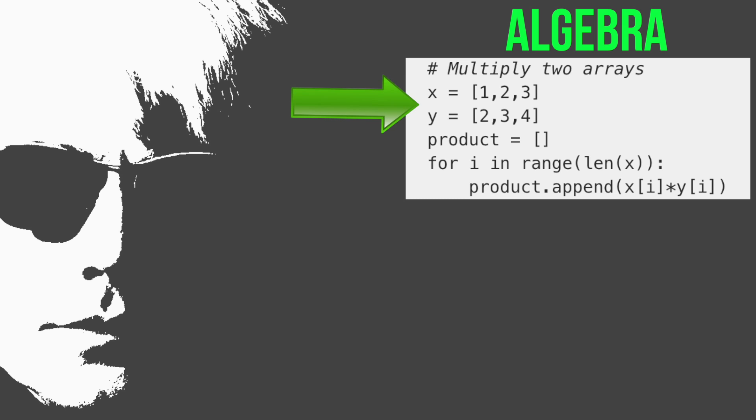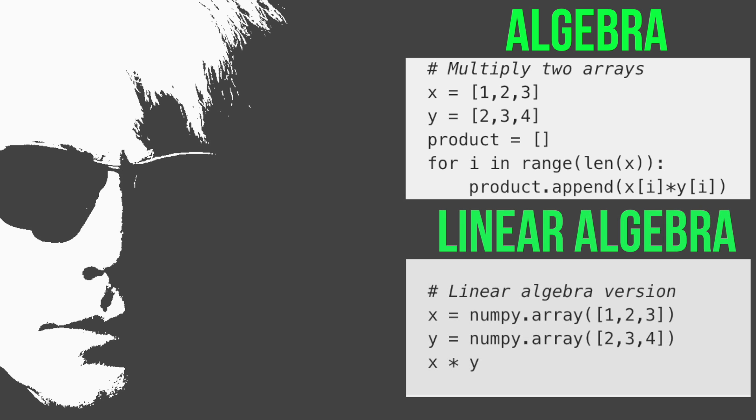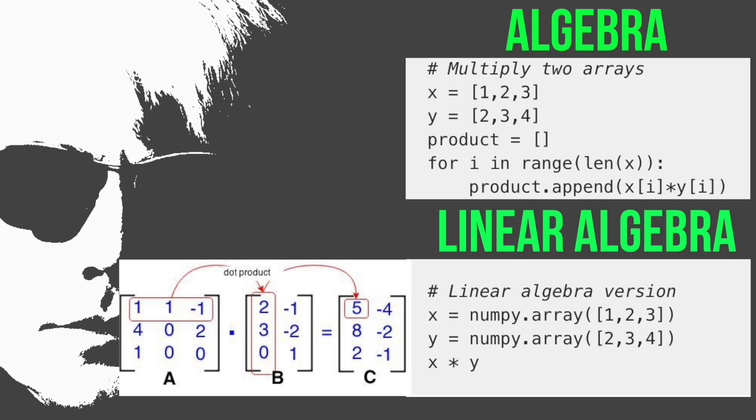and divide them. So given two arrays, the algebraic way to multiply them would be to do it like this. And the linear algebraic way would look like this. We compute the dot product instead of multiplying each number like this.